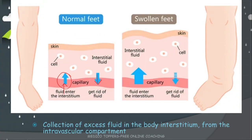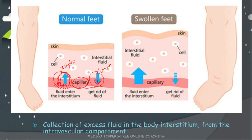This is how the normal feet will be appearing. Here in this normal feet you can see the capillaries. In this capillary we can see two arrow marks. This arrow mark is mentioning that the fluid from the vascular compartment is moving towards the interstitium, and here fluid from the interstitium is moving inside the vascular bed. This is the normal thing happening in the body, because of hydrostatic pressure and oncotic pressure.